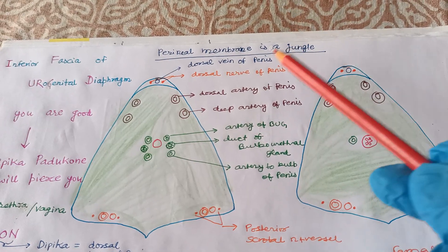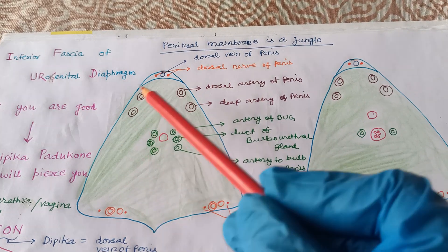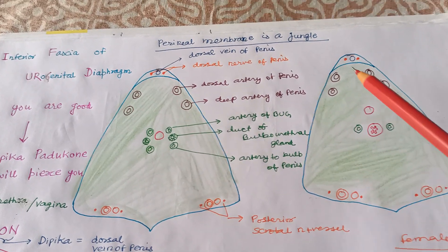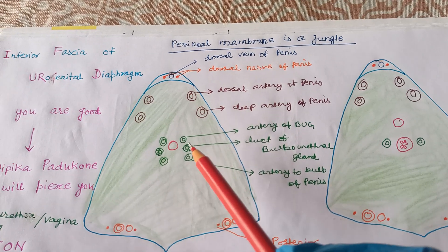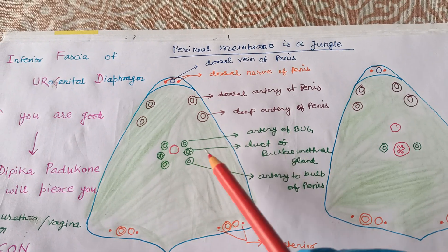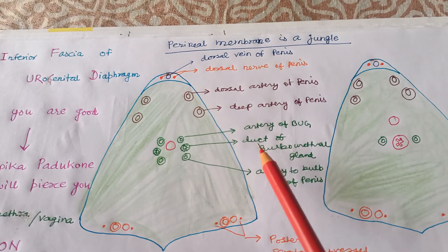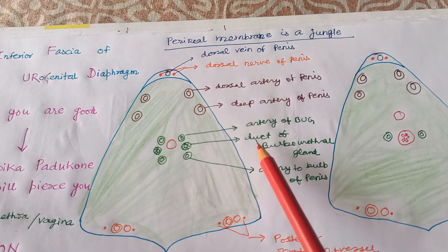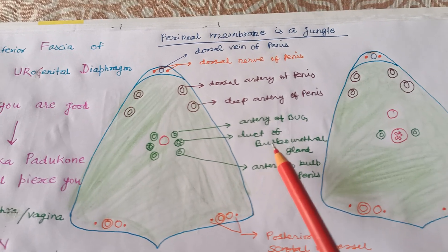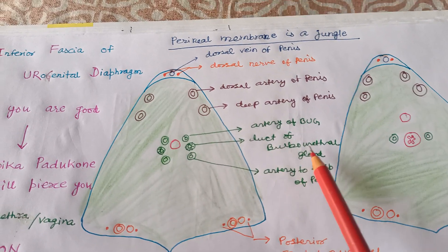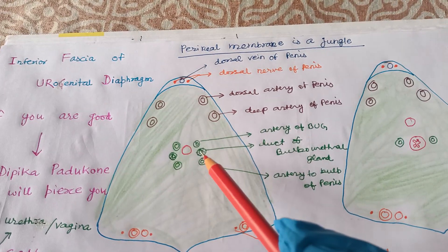The perineal membrane is like a jungle. Look at this green area. This is like a jungle in which one dakait lives. This is a duct — D-U-C-T — very much homologous with the dakait. So, the duct of bulbourethral gland, abbreviated as BUG, is the duct of BUG that lives in this jungle.